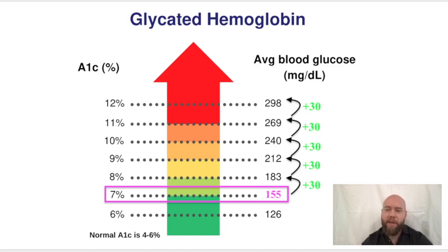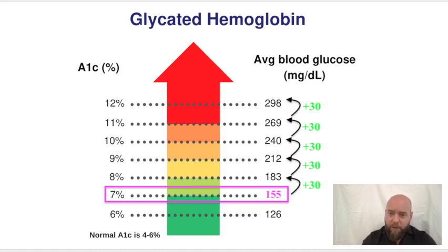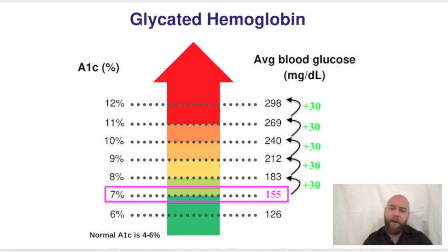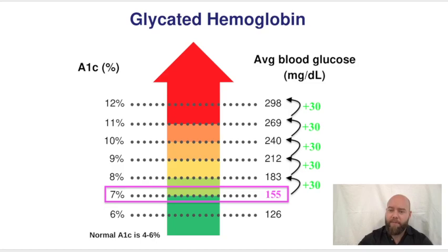You can do this mental math in your head under pressure fairly easily, depending on how good at math you are. Just remember: 7% is associated with 155, and you add 30 for every one A1c you go up after that. And that's it.